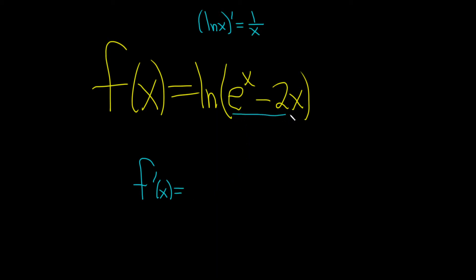It's 1 over whatever you see here, so 1 over e^x - 2x, times the derivative of the inside function. The derivative of e^x is e^x, and then minus the derivative of 2x, which is 2.